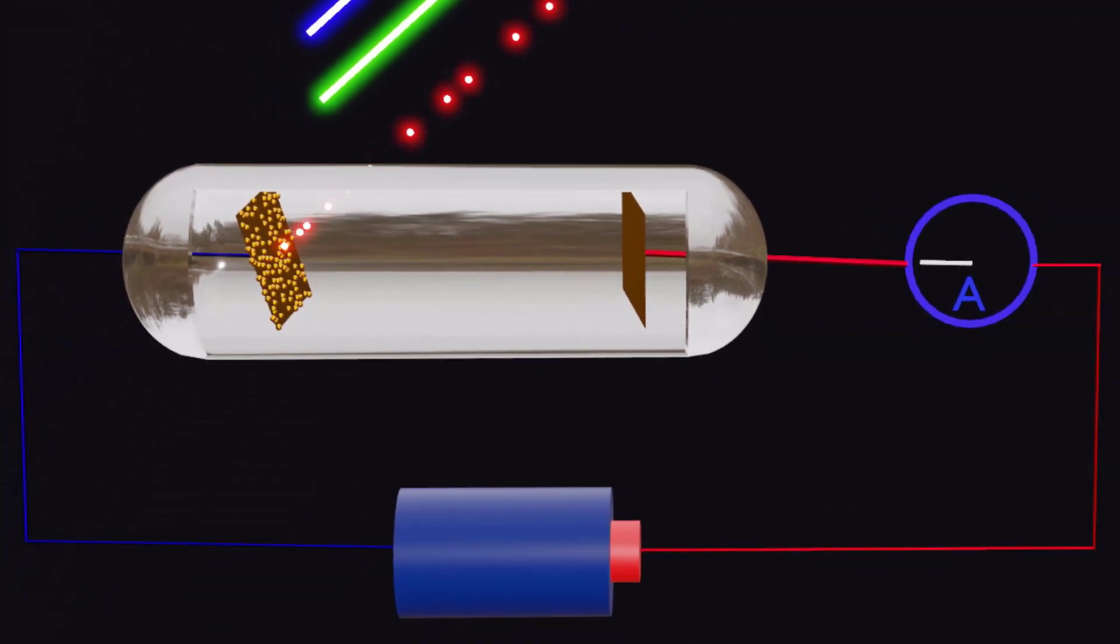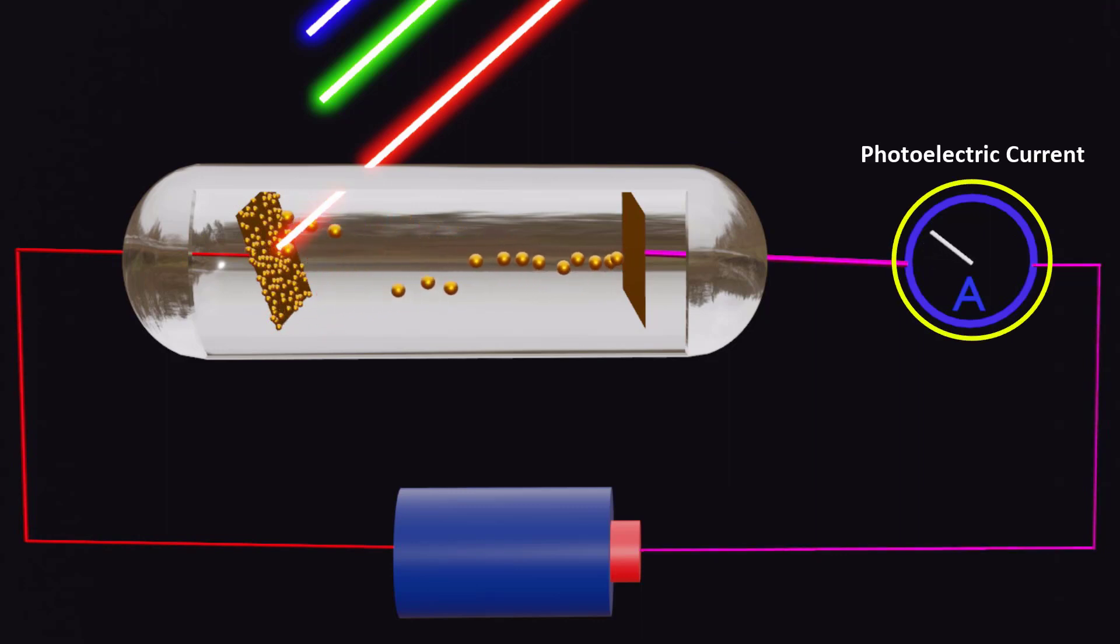To measure the photoelectric effect, we set up a circuit where the metal surface is connected to the negative terminal of a battery. We also connect an ammeter in series to measure the resulting photoelectric current, which indicates the flow of ejected electrons.